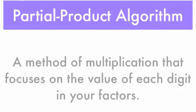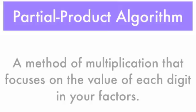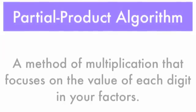The partial product algorithm is a method of multiplication that focuses on the value of each digit in your factors. Let's stop all this talking and give one a try.